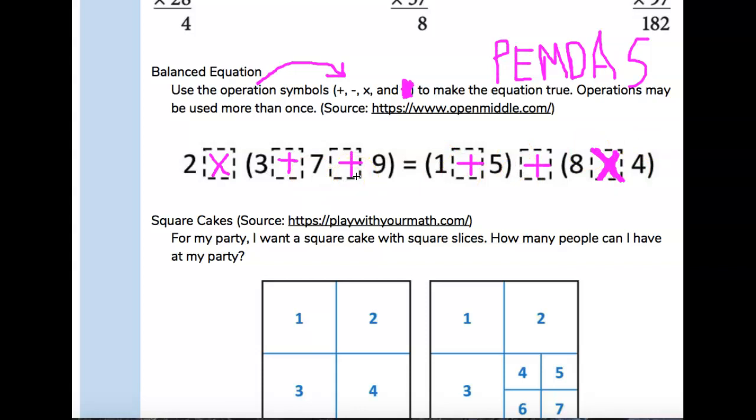All right. So we've got to do the parentheses first. So 3 plus 7 is 10. Plus 9 is 19. Okay? And then we rewrite this to... Oh, 2 times 19. And then equals... And now we're going to do the parentheses. 1 plus 5 is 6.